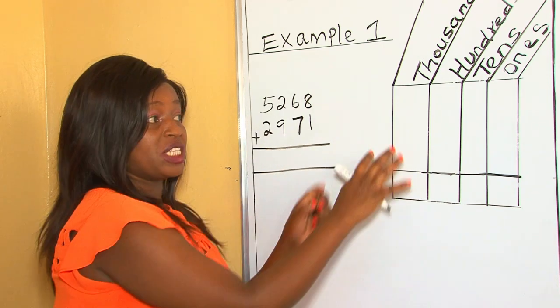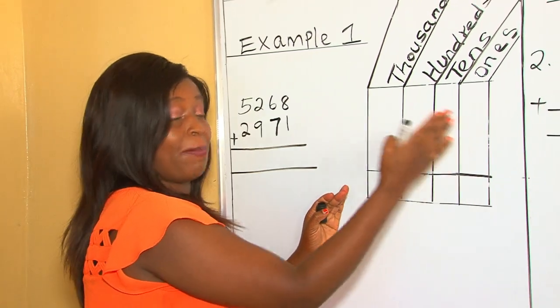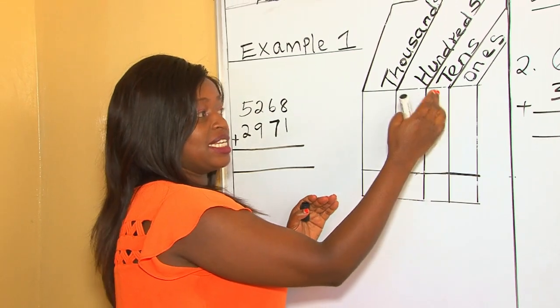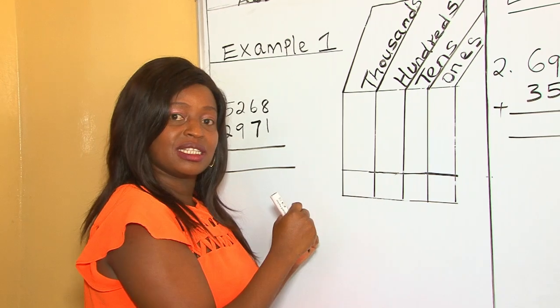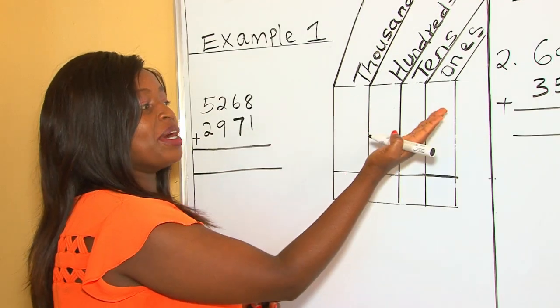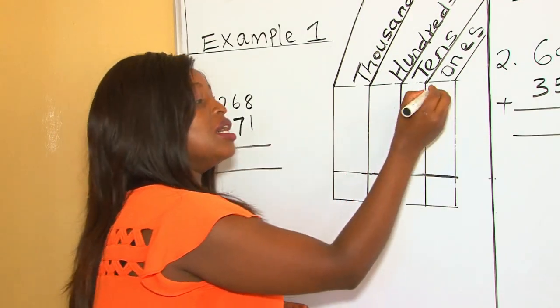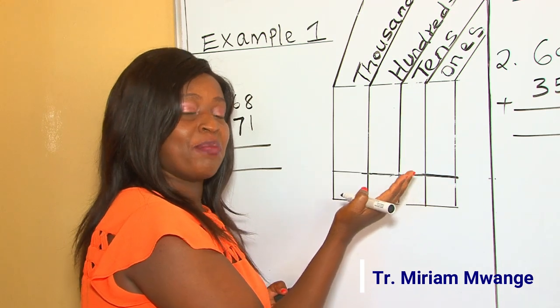First of all, we use this table that shows the place value, that is 1, 10, 100, and 1000. Now we start by putting our respective digits to this table, following the place value, the order of place value.